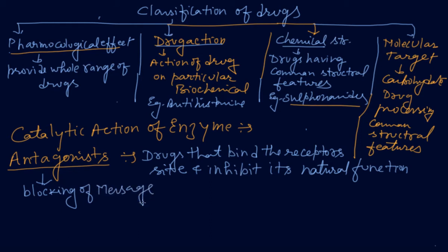For example, suppose we don't want to give a message to students, so we stop them by contacting the parents - that is like antagonists. Now another term: agonists.